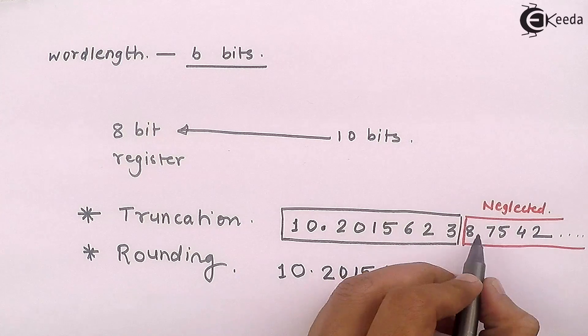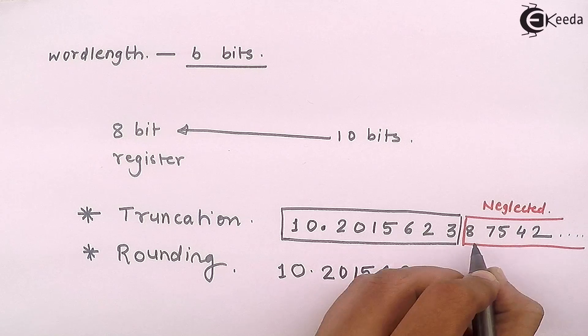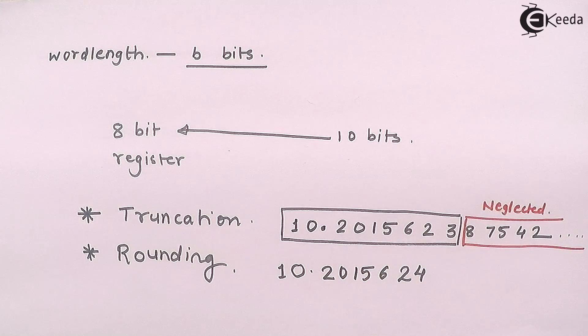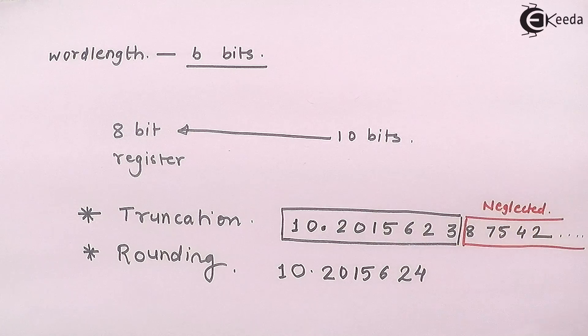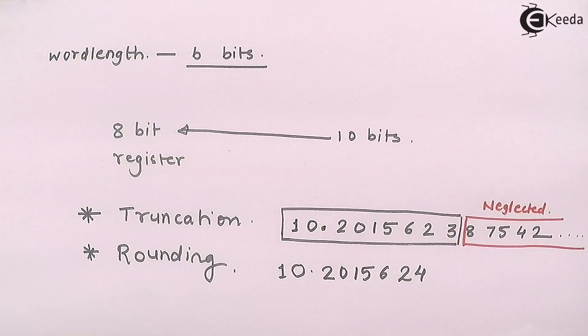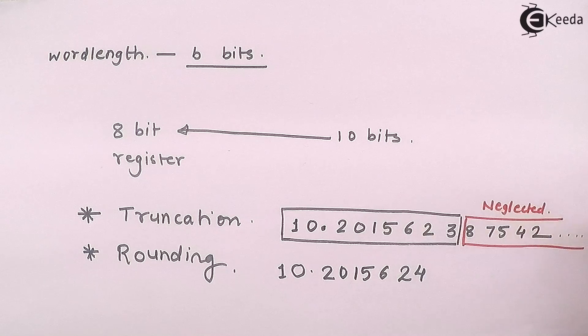So I will round the 8 to 3 as 4 and I am neglecting 7, 5. So there is one rounding and rest neglected. What you can do further is you can start rounding off.